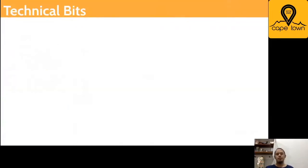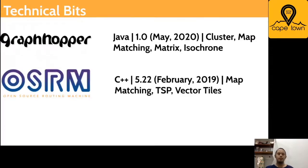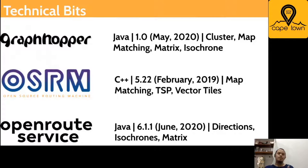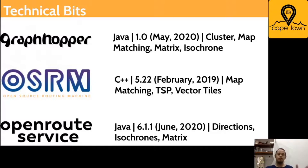Let me explain a bit of the technical background. GraphHopper and OpenRouteService are both developed using the Java programming language. OSRM is the only one that's different — it's developed using C++. All three are pretty actively developed, and they also have different features you can explore. Some features may be similar across them, but not necessarily will the results be the same, as will be proven by my experimentation in this talk.